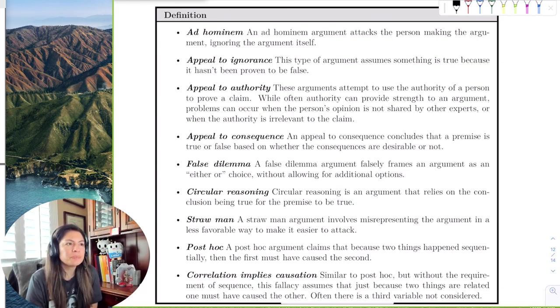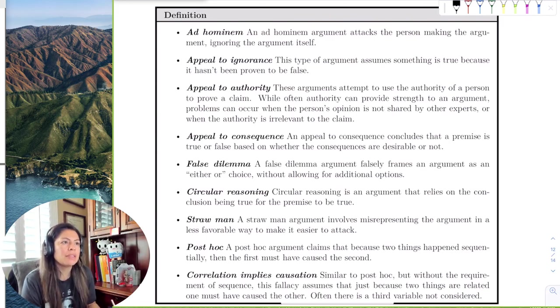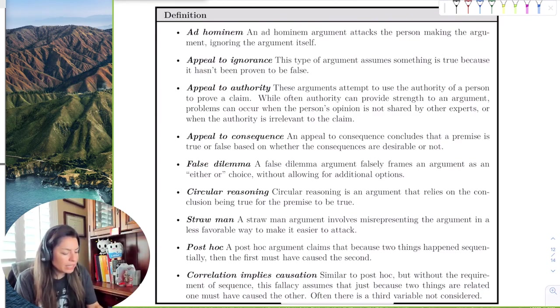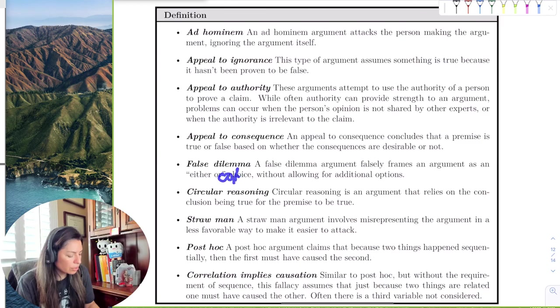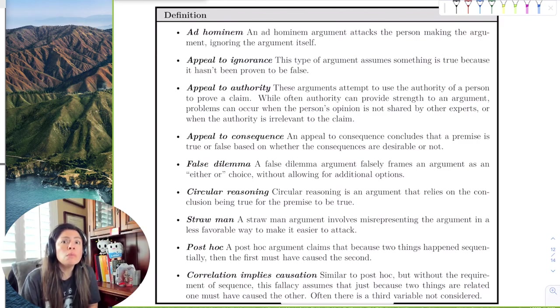The next one is false dilemma. The false dilemma argument falsely frames an argument as an either or without allowing additional options. So, for example, I like this one a lot because it's like Coke or Pepsi. Coke or Pepsi. You're like, well, I don't like, I like Sprite. No! Coke or Pepsi. That's a false dilemma because you don't want to choose either, right?